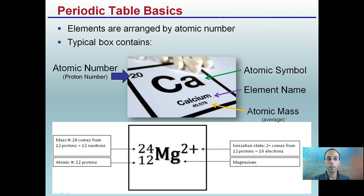Now, periodic table basics. Elements are arranged by atomic number, and a typical box — here we're using calcium as an example — contains the atomic number, which is the number of protons; the atomic symbol, Ca (capital C, lowercase a — that's important); the name, calcium; and the atomic mass, which is technically the average atomic mass, which is why it's carried out to a decimal.